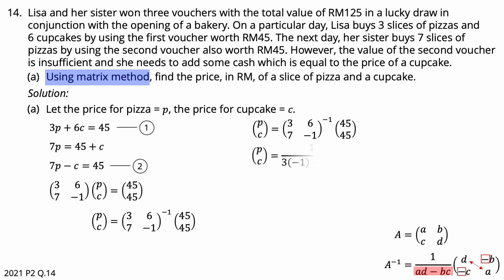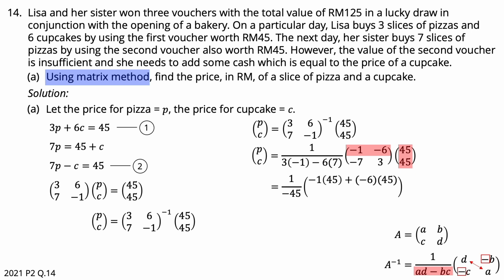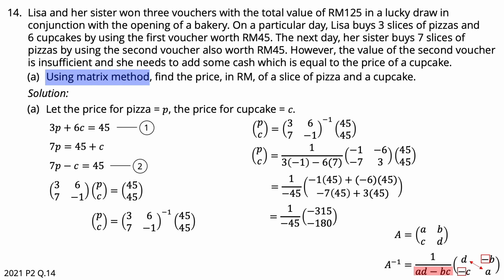The inverse of matrix [3, 6; 7, −1] is 1 over determinant (3×(−1) − 6×7), shifting positions of 3 and −1 and negating 6 and 7. The determinant is −45. Solving by matrix multiplication: first row gives (−1×45 + (−6)×45) and second row gives (−7×45 + 3×45), giving a column matrix of −300 and −105, both divided by −45. The solution is P = 7 and C = 4. So it costs Lisa RM7 per pizza and RM4 per cupcake.